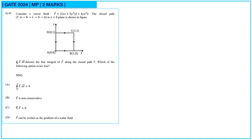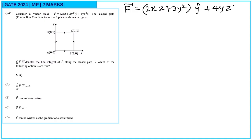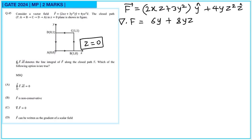Next question. Consider a vector field F-bar. The closed path is given. Let us check divergence and curl. F-bar equals (2xz + 3y²) y-cap plus 4yz² z-cap. The divergence del·F gives 6y plus 8yz. In the xy-plane where z equals 0, this becomes 6y, which is not equal to zero. So del·F is not zero.